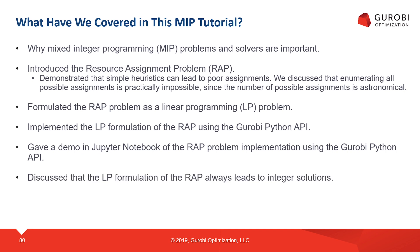In the following video we discussed the LP formulation for the resource assignment problem and explained that this problem has special properties that always guarantee the optimal solution will be a binary variable. But we also gave a demo showing that if we add an extra budget constraint, we destroy that property that allows linear programming to solve this problem, which motivated the use of mixed integer linear programming technology.